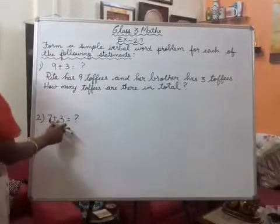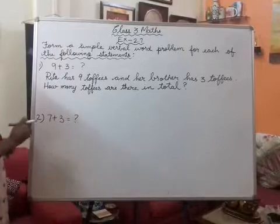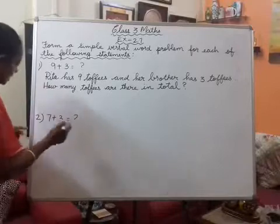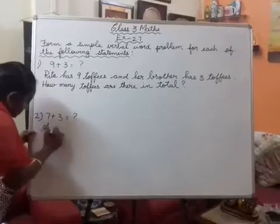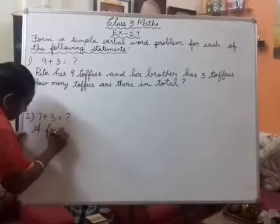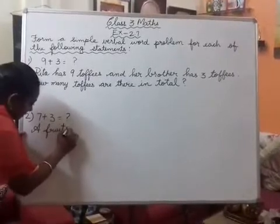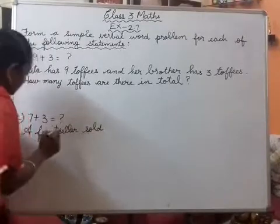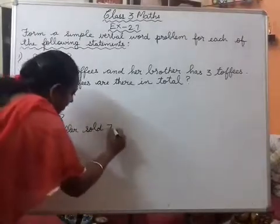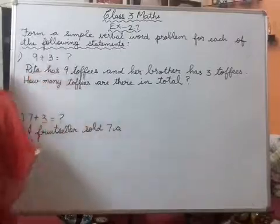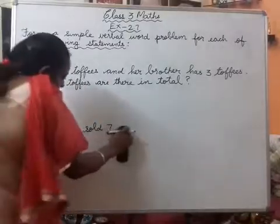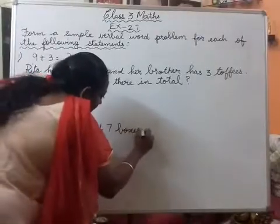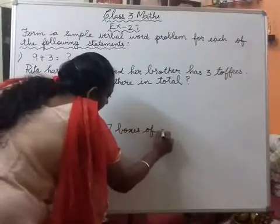7 plus 3. Okay, 7 plus 3 equals question mark. Okay, so I will frame another question. Okay, a fruit seller sold 7 boxes of apples. 7 boxes of apples.